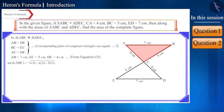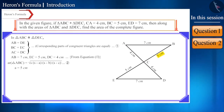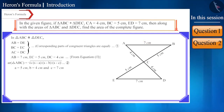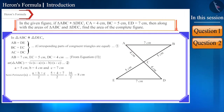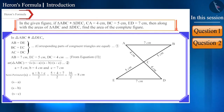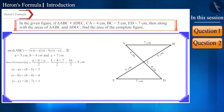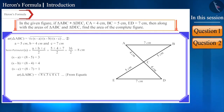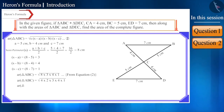We will use Heron's formula for triangle ABC to find its area. Let a = 5 cm, b = 4 cm, and c = 7 cm. First we find the semi-perimeter of triangle ABC, which is 8 cm. Then we find the values of s − a, s − b, and s − c. Substituting these values into Heron's formula and simplifying, we get the area of triangle ABC as 4√6 cm².